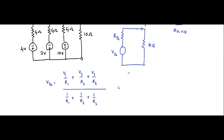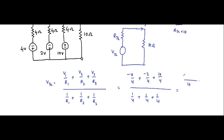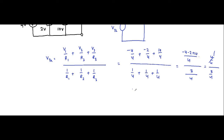So V1 is minus 4 divided by R1 which is 4, plus V2 which is minus 2 divided by 4, plus V3 which is 10 divided by 4. The denominator is 1/4 plus 1/4 plus 1/4, since R1 equals R2 equals R3 equals 4 ohms. This gives us (minus 4 minus 2 plus 10) divided by 3, which is 4/4 divided by 3/4 — that is 4/3 volt. So VTH equals 4/3 volt.